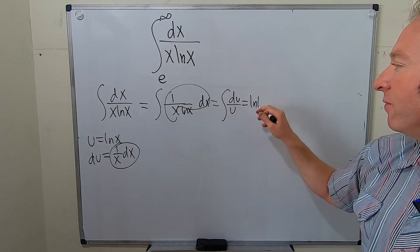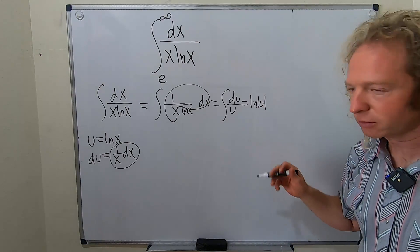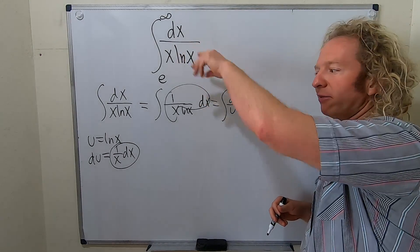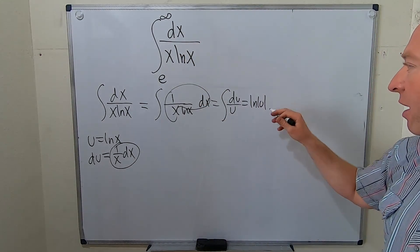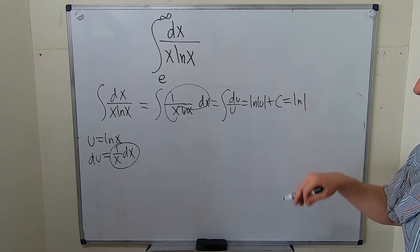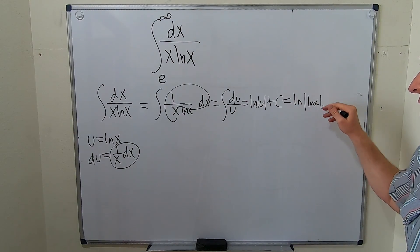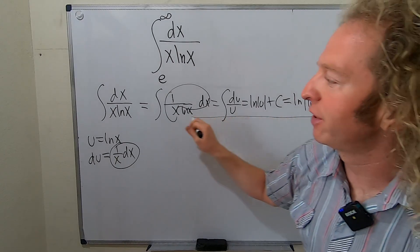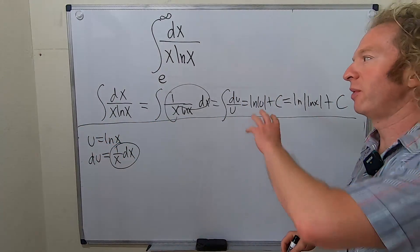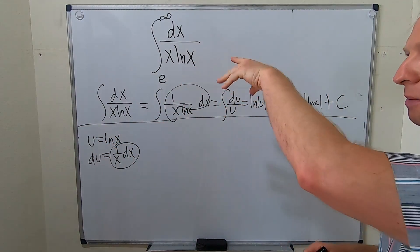This is going to be ln absolute value of u plus a constant, which is not really going to matter because we have limits. But I'll write it as a formality. And this is the natural log of the absolute value of ln x plus a constant. So that's the indefinite one. You can always do the indefinite one first and then come back and deal with the limits.